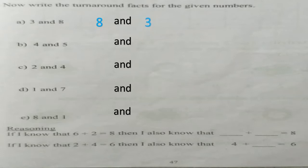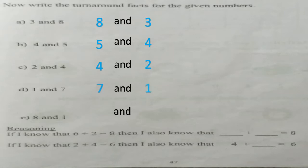Very good. For four and five, it will be five and four. For two and four, it will be four and two. For one and seven, it will be seven and one. For eight and one, it will be one and eight.